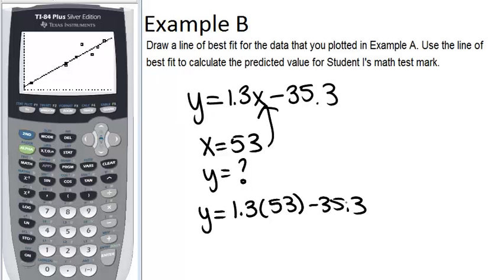So I know that Y will equal 1.3 times 53 minus 35.3. And of course, this is just a guess based on the data we have. We don't know for sure what student I would have gotten, but based on how that student did and how all the other students did with chemistry compared to math, this is what we would guess. And now we can calculate this, and we get that Y equals 33.6. So we would have expected student I to get about 33 or 34 on their math test.